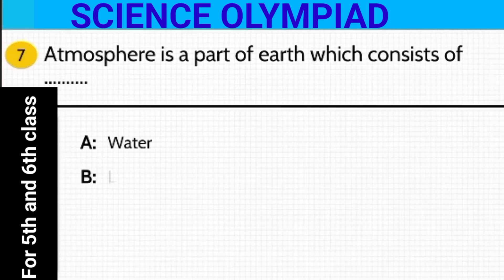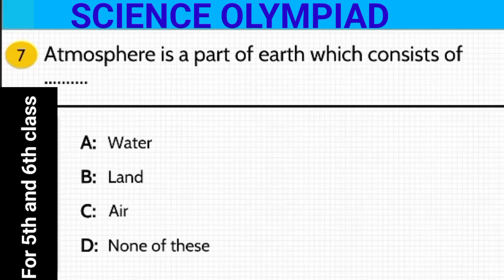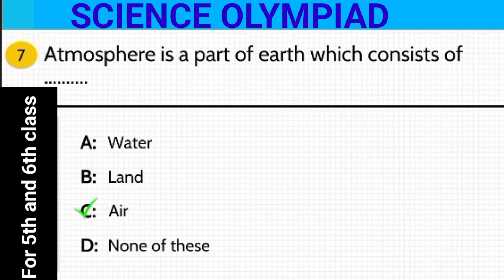Atmosphere is a part of earth which consists of — water, land, air, or none of these? What is atmosphere? It is the part of earth which consists of air.